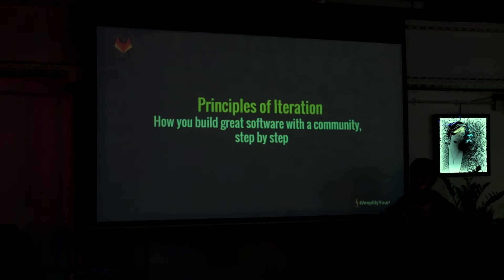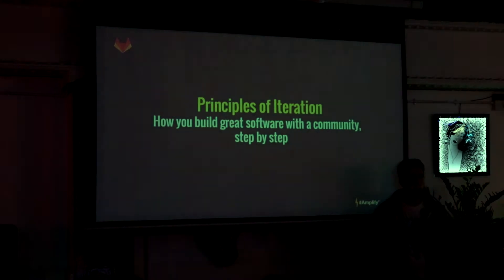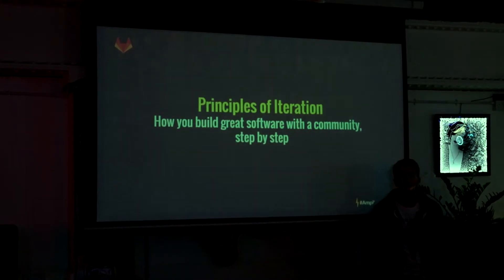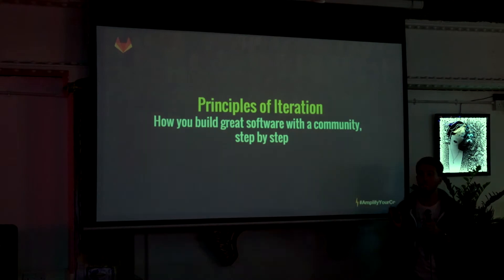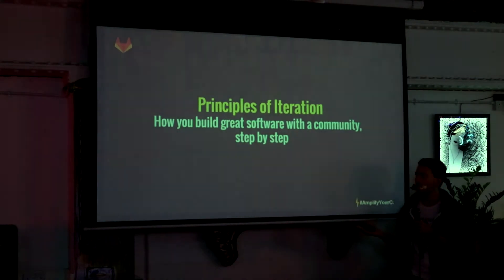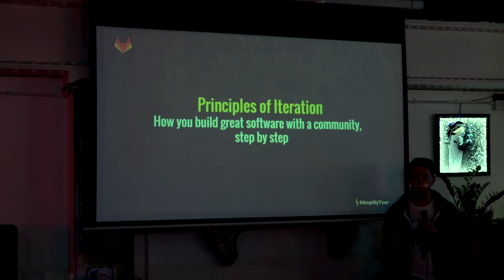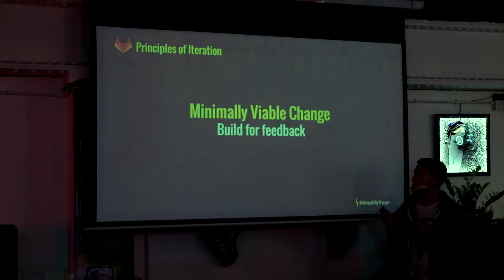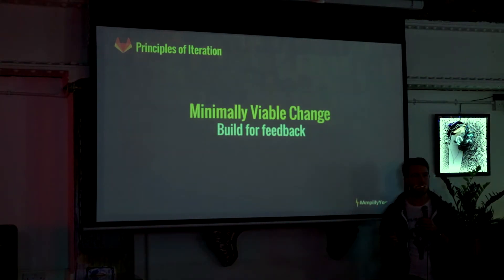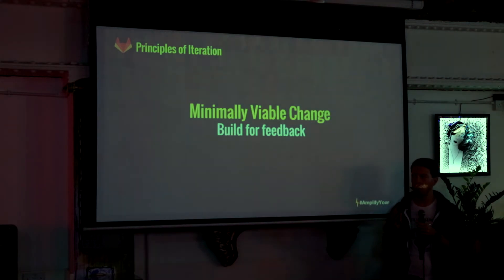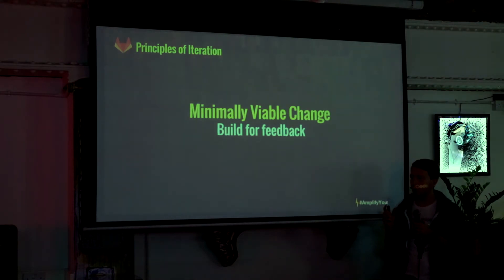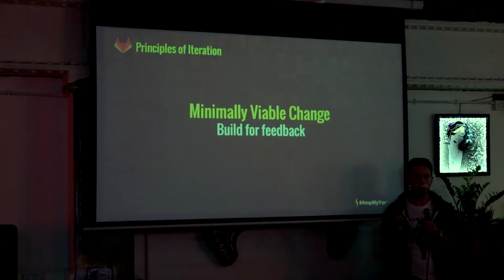What we do is we iterate, and we set a few principles of iteration — maybe I should call it conversational development, because that's what it really is — to build a better product every single month. The most important principle is the minimally viable change. Whenever you have an idea, like slash commands in chat or something else, we look for the minimal possible way to actually ship it. How can we reduce this feature to its very essence?